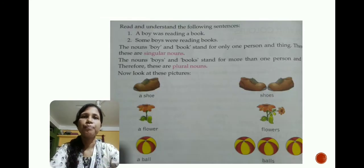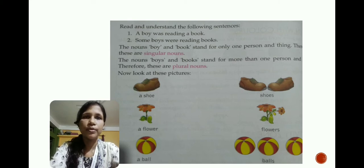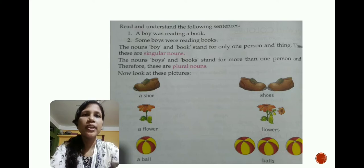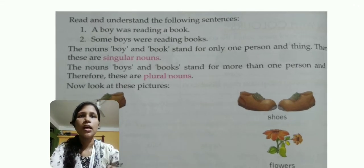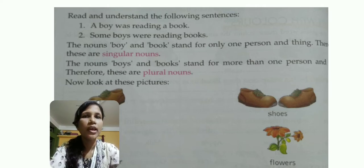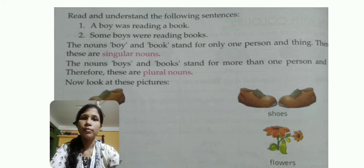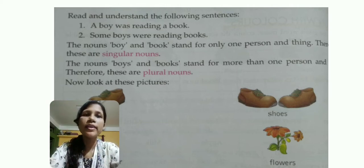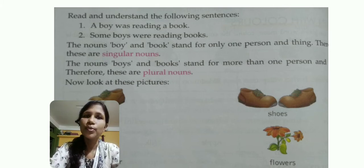Now let us understand it in a descriptive way. Read and understand the following sentences. First: 'A boy was reading a book.' Second: 'Some boys were reading books.' Here the nouns 'boy' and 'book' stand for only one person or thing — these are called singular nouns. On the other hand, the nouns 'boys' and 'books' stand for more than one person, and therefore these are plural nouns.